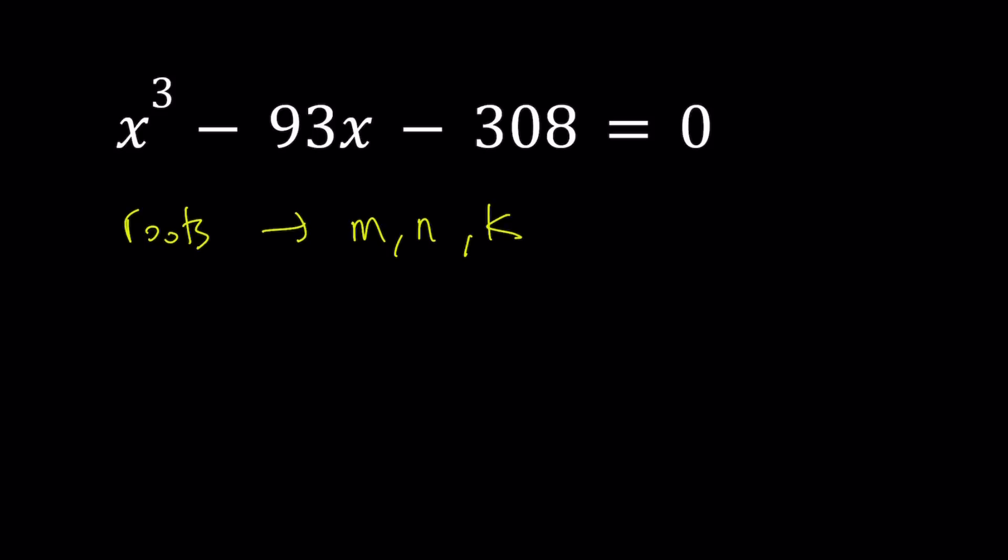We have something called rational root theorem. So if there are any rational roots, they can be written as the divisors of the constant term divided by the divisors of the leading coefficient. But since we have a monic polynomial, which means the coefficient of x cubed is 1, all the rational solutions, if there are any, are going to be integers. So we're going to be testing for integer solutions.